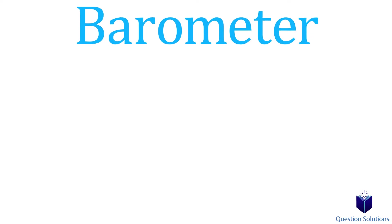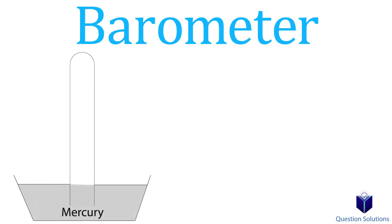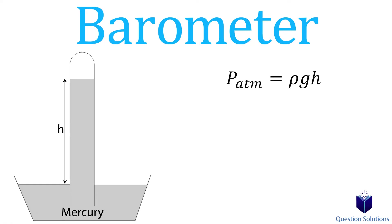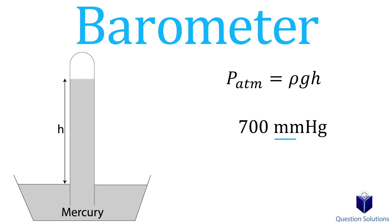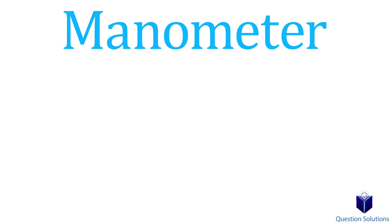One of the most common instruments used to measure atmospheric pressure is called a barometer, which is why atmospheric pressure is often called barometric pressure. We can find atmospheric pressure using the equation: P = rho × g × h, where rho is the density of mercury, g is the acceleration due to gravity, and h is the height of the mercury column above the free surface. This height is often given in millimeters of mercury, called torr, and is converted to meters.